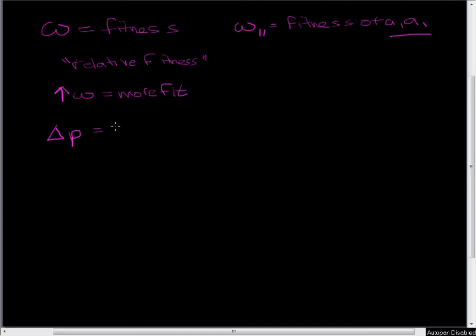So we know that delta P is going to be P times the average excess of fitness for whatever allele we're looking at, divided by the average fitness for the population.